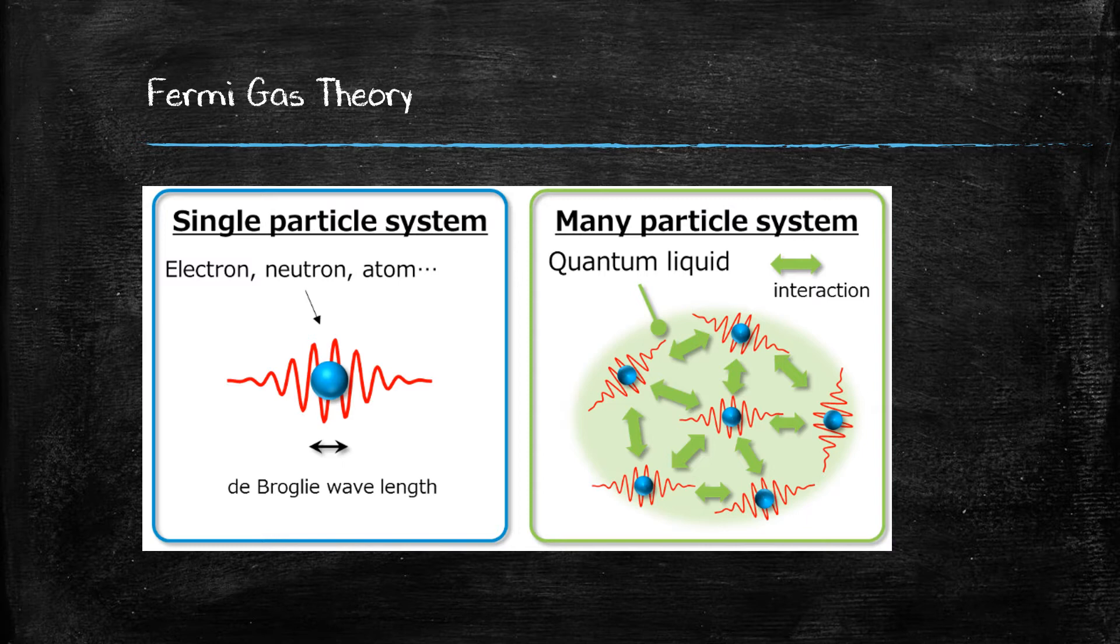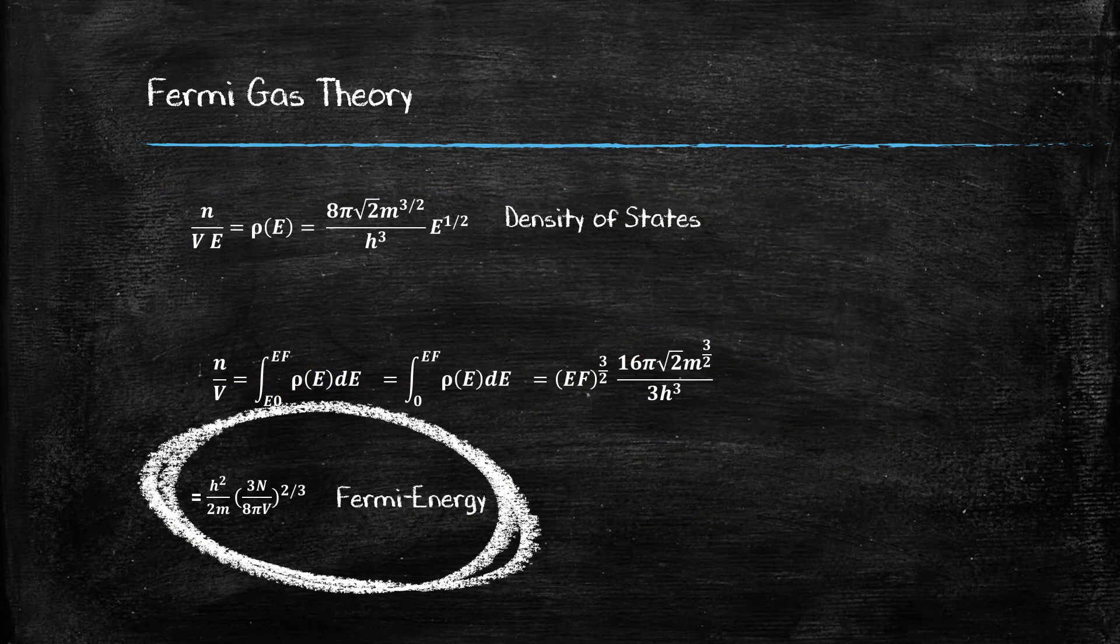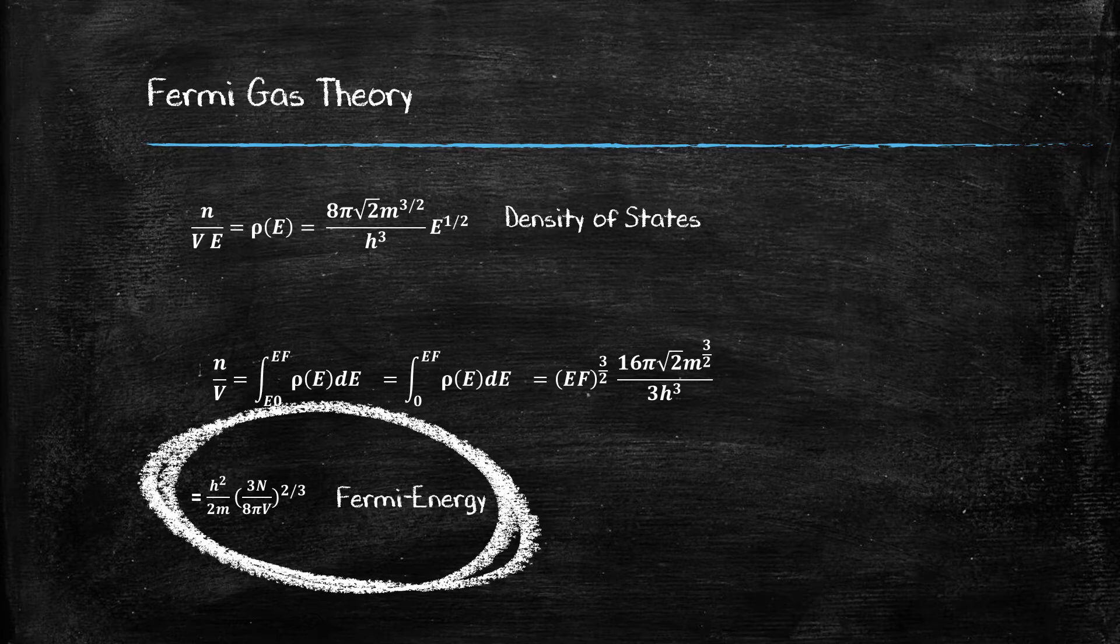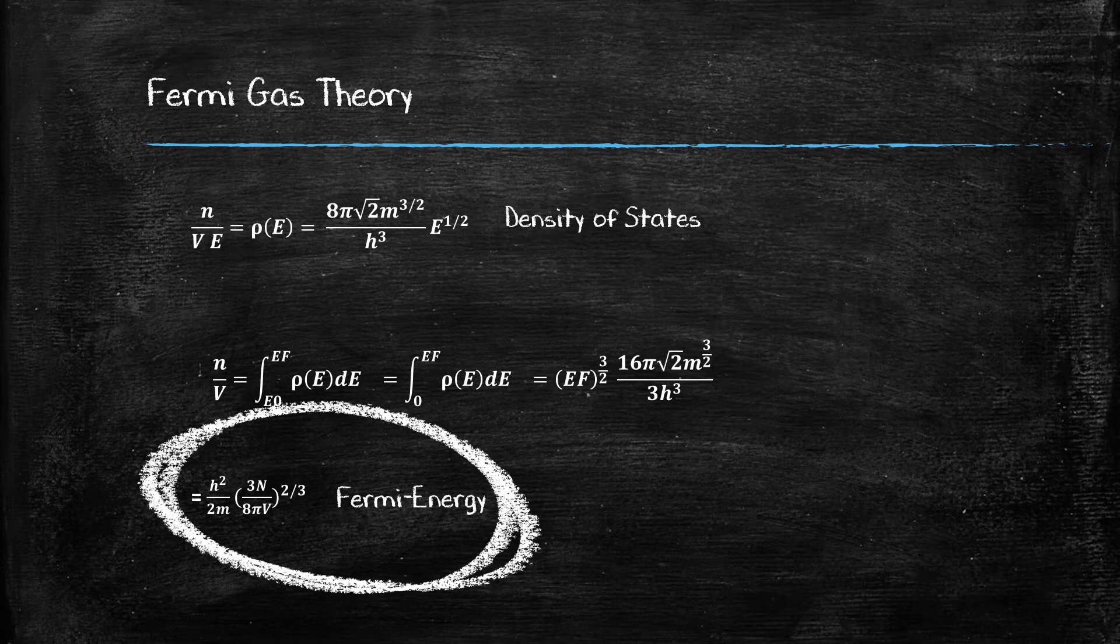The Fermi gas theory states that at a temperature of zero Kelvin, or absolute zero, the Fermi energy of the non-interacting electrons, or fermions, in the topmost valence energy shell can be described by its mass and the concentration of the electrons, n over v. This can be seen by integrating the density of states function, which tells us the number of states possible per volume and per energy. You integrate this function from the ground state, taken to be at an energy of zero, to the topmost energy state, called the Fermi energy.